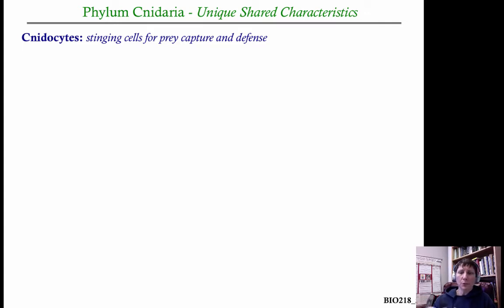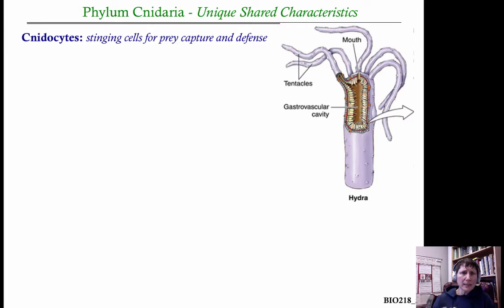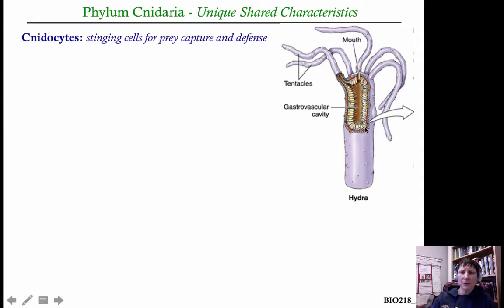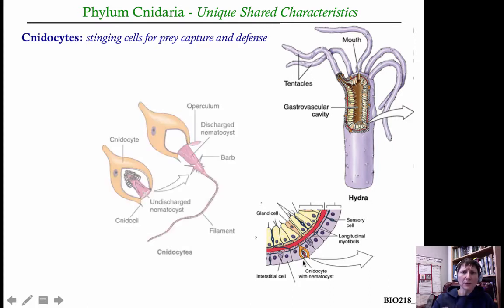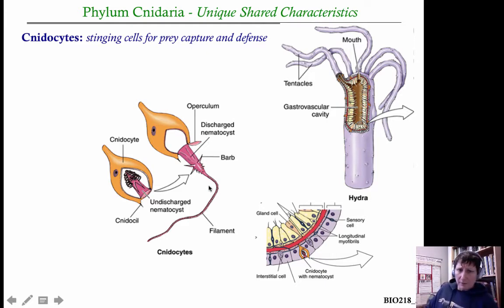Cnidocytes are structures that could loosely be referred to as stinging cells, and they use these for prey capture and for defense. Cnidarians can have cnidocytes anywhere on their bodies — on the solid part of their bodies, on the tentacles, just about anywhere. This is an example using a hydra: here's a cross section and you can see the cnidocytes.